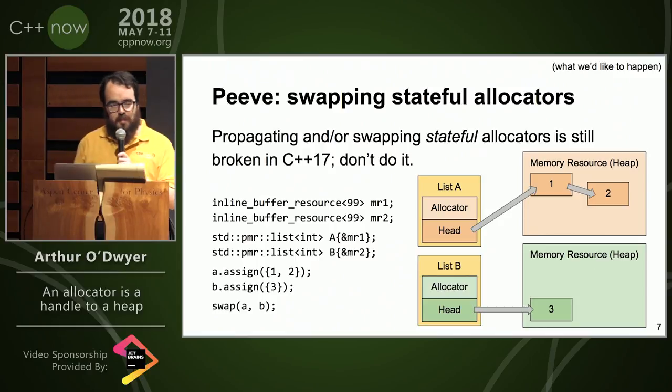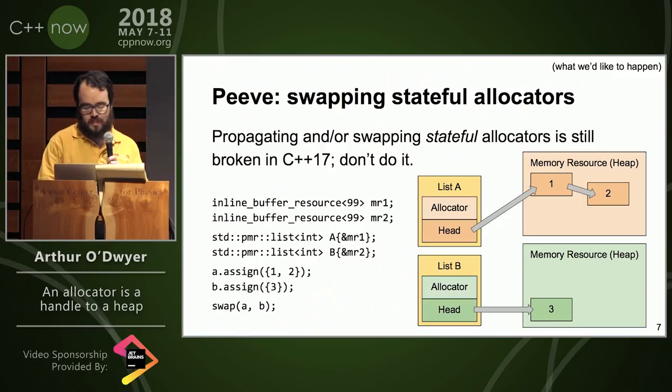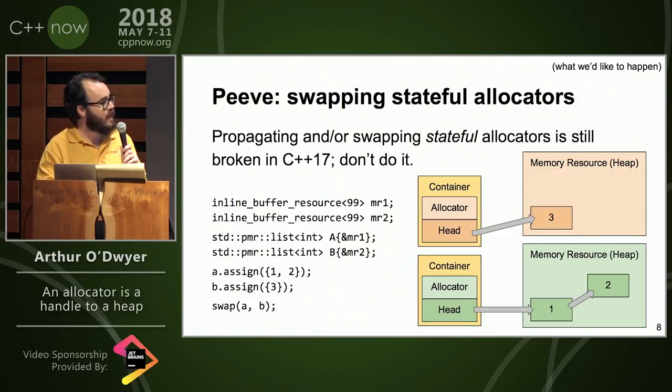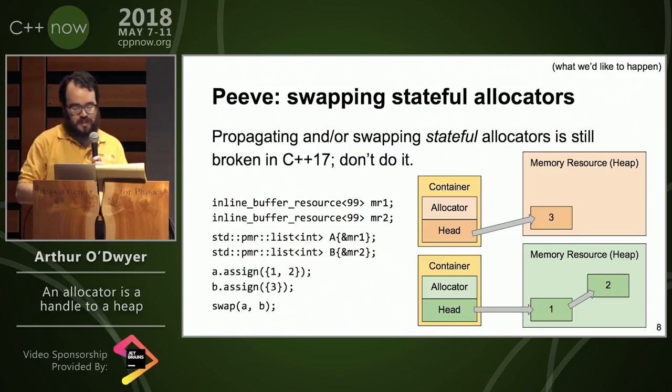And I put some stuff in them. And then I call std swap, which of course calls the list member function swap. And what we would like to happen is that one, two in the red heap, three in the green heap, we want that to just swap the sequence of the list. It makes perfect sense, right?